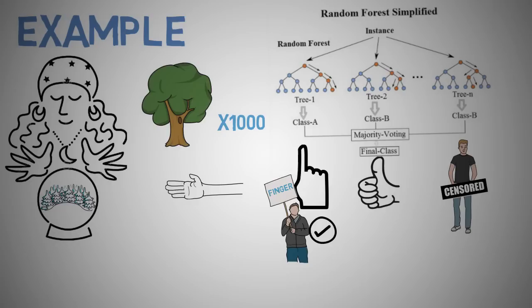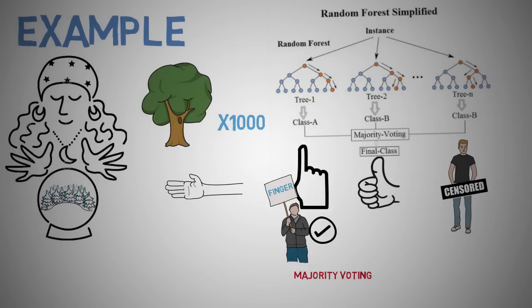If finger is getting highest votes, then the final random forest returns the finger as the predicted target. This concept of voting is known as majority voting, just like elections.